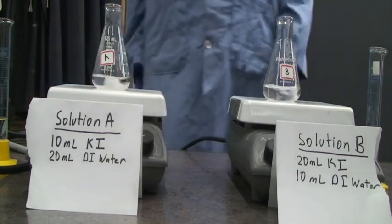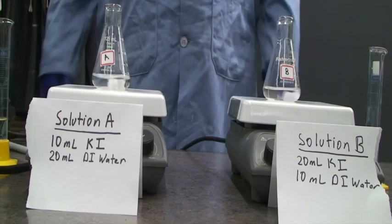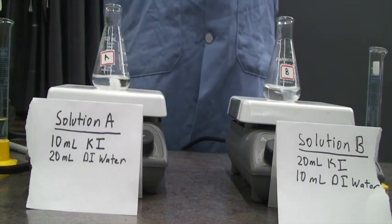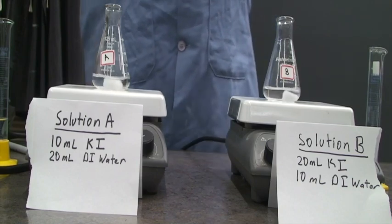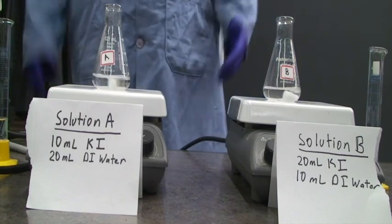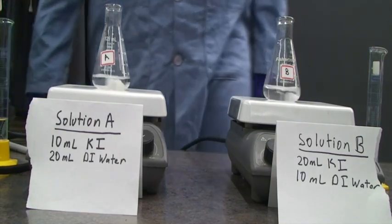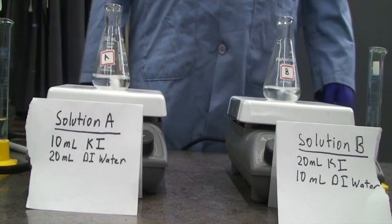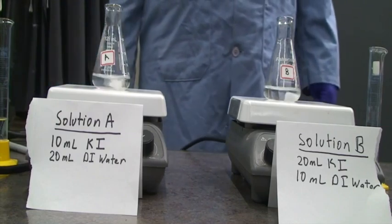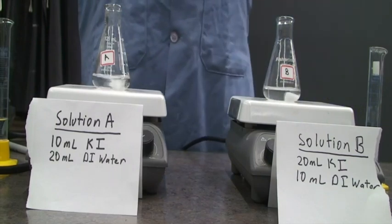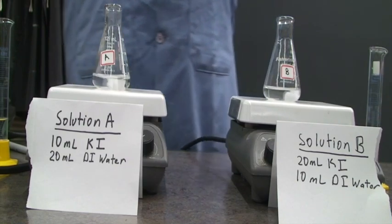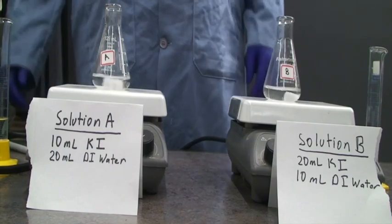Welcome back to general chemistry lab. We're going to do our last experiment of this semester for Chem 120: rates of reaction. You'll be analyzing some pre-recorded kinetics data for this reaction. The reaction we're studying is between I⁻, the iodide ion, and the persulfate ion S₂O₈²⁻. The reagents we're using have potassium counter ions, so we're reacting KI (potassium iodide) and K₂S₂O₈ (potassium persulfate).